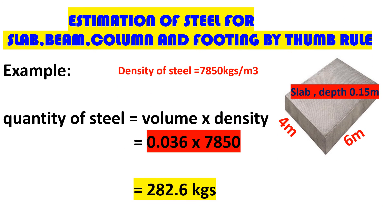The density of steel is approximately 7850 kg per cubic meter. To get the quantity of steel, we multiply the volume of steel by the density: 0.036 × 7850, which gives us 282.6 kg.